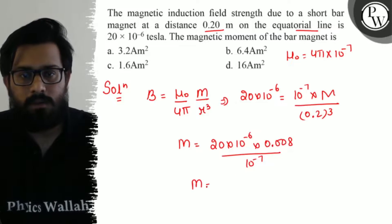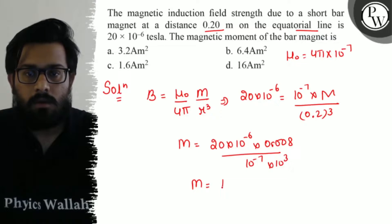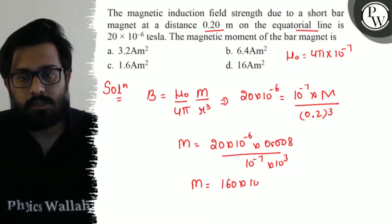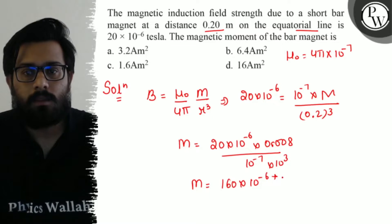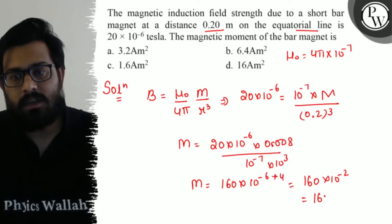^(-6) plus, so 160×10^(-2), and this can be written as 16×10^(-1) or 1.6 ampere-meter squared. This is your final value for the magnetic moment.